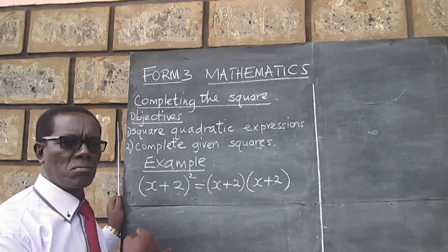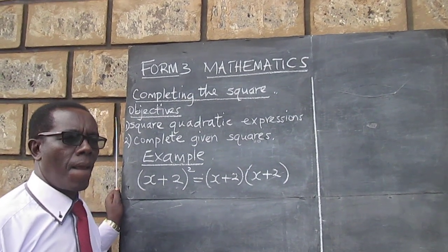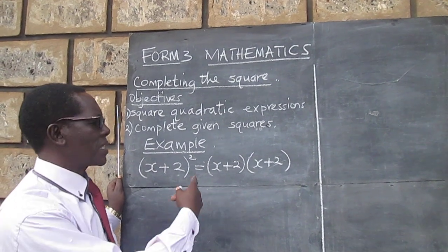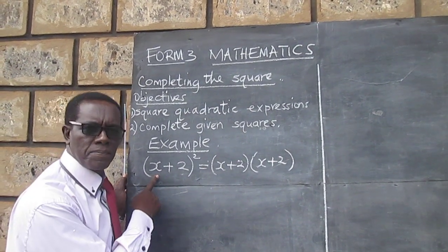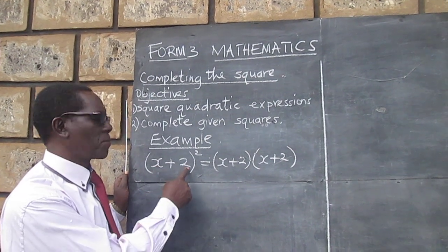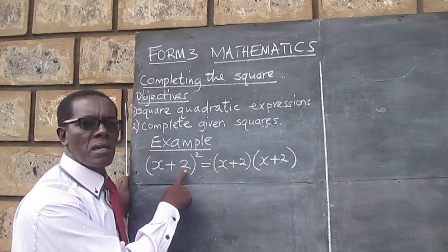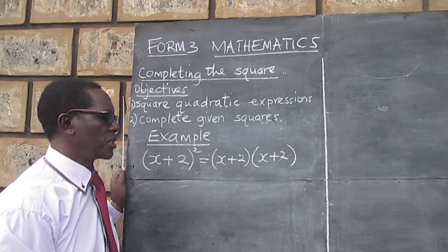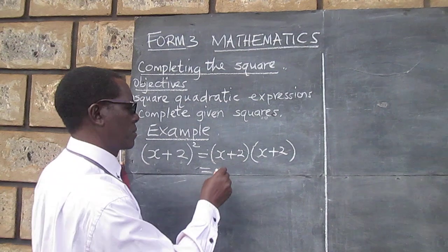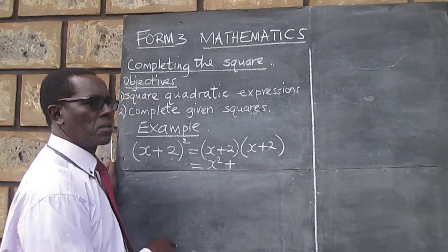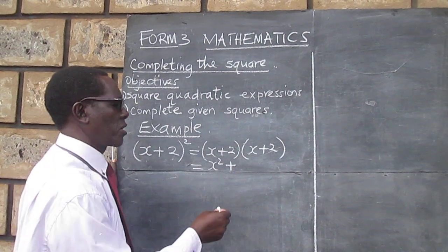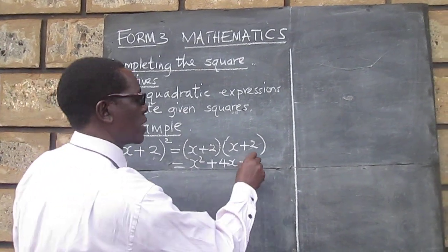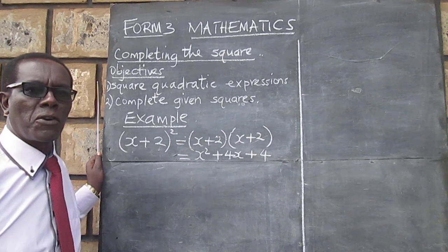From our Form 2 knowledge of quadratic expressions, we can square this one either by distributing, or straight away by squaring x, then multiplying the x by 2 and doubling, and then squaring 2. Let us use the second method, where we square x, then multiply this and double, so that we have 4x, and then square 2. And that will give us x squared plus 4x plus 4.